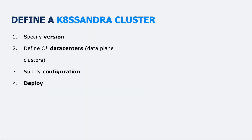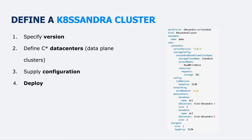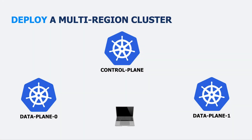Now let's look at what it takes to create a K8ssandra cluster. We create a custom resource called a K8ssandraCluster where we specify the version, the Cassandra data centers (which correspond to our data plane clusters), any configuration overrides, and then deploy it. From our workstation we run kubectl apply and push that K8ssandraCluster object to our control plane cluster.